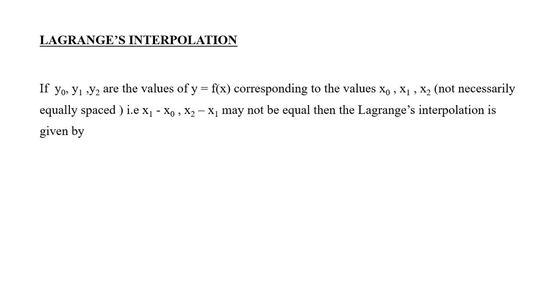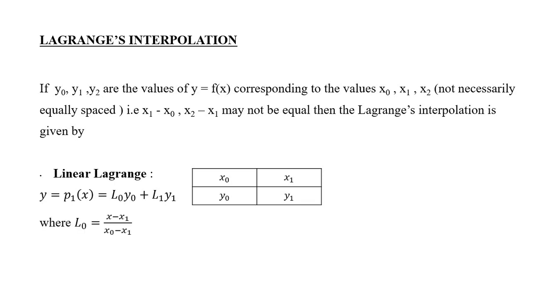If you have two points for x, we get linear Lagrange and the formula is y equals L0 y0 plus L1 y1, where L0 is obtained using this formula. In this formula you have to skip x0 from the table. In the numerator we get x minus x1 by x0 minus x1. To obtain L1 you skip x1 from the table, so x minus x0 by x1 minus x0 will give you L1.